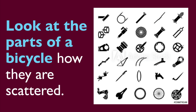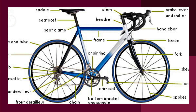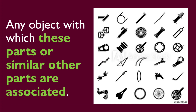So is the making of a bicycle. Look at the parts of a bicycle — how they are scattered. Some of these may even be parts of a car or other vehicles. In the way they are scattered, do they make any sense? Do they produce any meaningful outcome? Of course not. They don't give any meaning or form any shape.